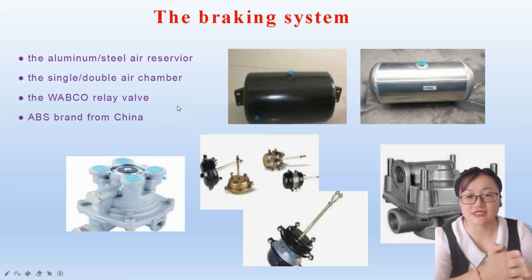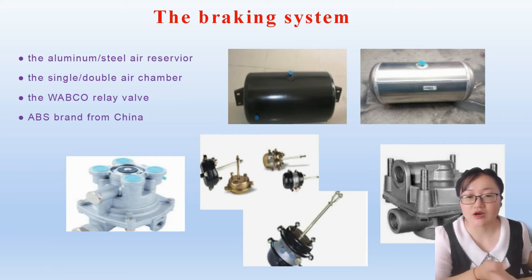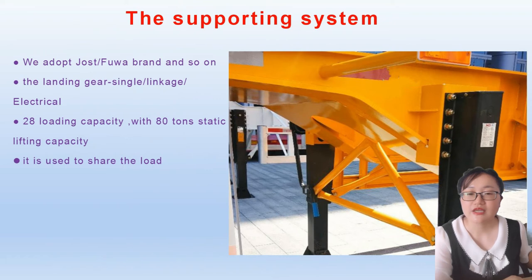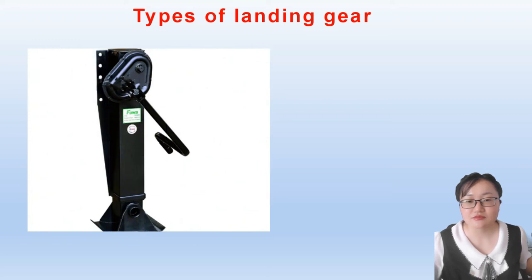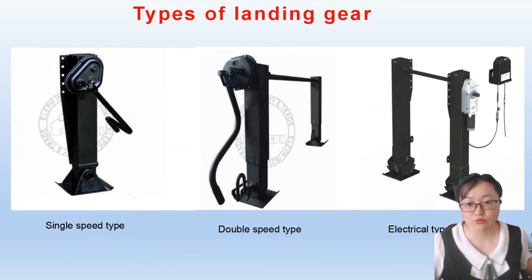This is our braking system. It includes the alloy steel air reservoir, single and double air chambers, the WABCO seal relief valve, and ABS from Wachana. All of the braking system components are designed to ensure your safety. This is our supporting system — we use the JOST and FUWA brand landing gear. The landing gear is divided into single-speed, dual-speed, and electric-operated types, so there are many choices available for you.